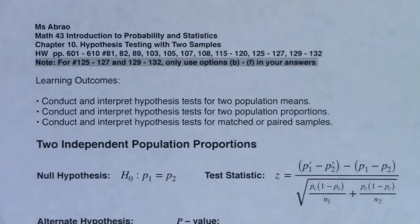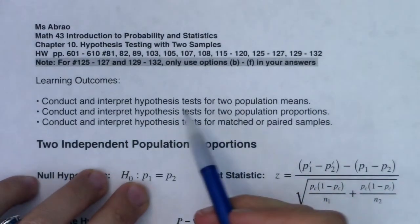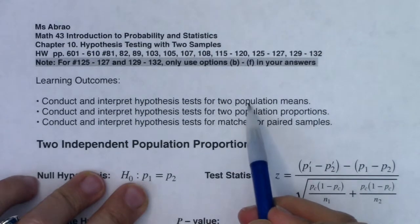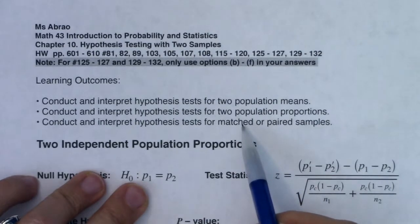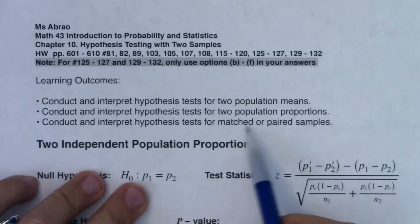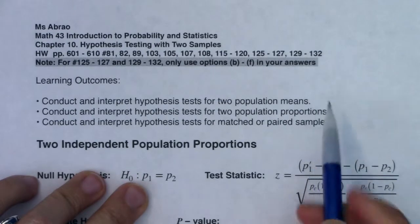You've got calculator buttons for two-sample confidence intervals. Your book doesn't really go through them, but I do want you to hear that those are options. We're going to conduct and interpret hypothesis tests for means, for proportions, and then matched pairs.